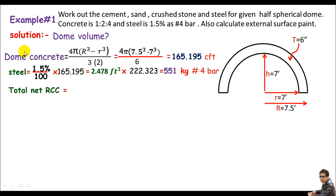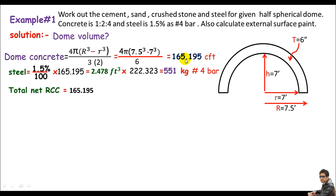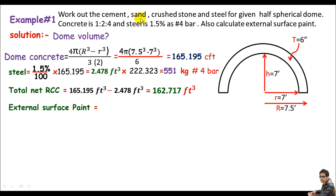Now for the net PCC, we subtract the steel volume from the total dome concrete: 165.195 minus 2.478 cubic feet, giving us 162.717 cubic feet as total PCC — because we've already deducted the steel. My next approach is to calculate the external surface paint area; we need to find how much area will be covered when painting the external top surface.